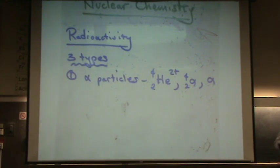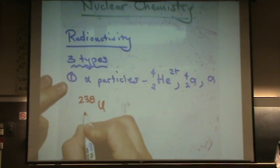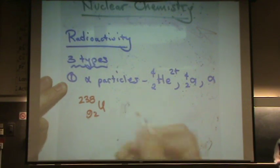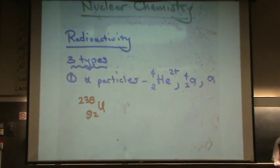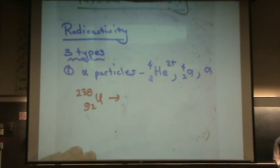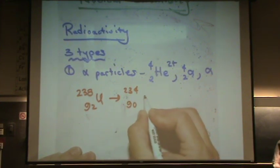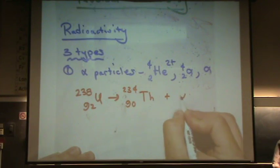I can give you an example of a reaction, and this will also show you how these kind of reactions go. Let's say we have uranium-238 that has a 92 mass number. This decays according to alpha radiation, which most really heavy elements do. It decays into thorium-234, plus an alpha particle.